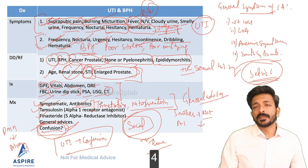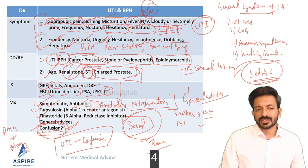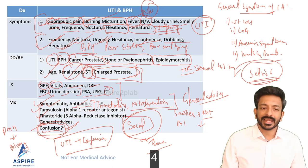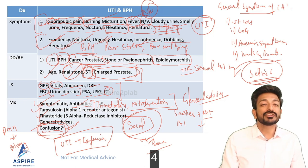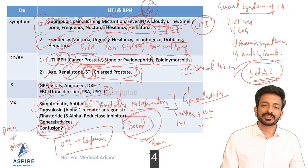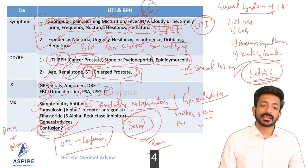In OSCE stations, the patient may ask: 'Is it cancer?' Take a thorough cancer history — weight loss, appetite loss, anaemia symptoms, lumps and bumps. If nothing is positive, it is unlikely to be cancer. In OSCEs, never say 100% sure — say 'it is unlikely based on your history, but we will do investigations like PSA and CT scan to make sure everything is fine.'